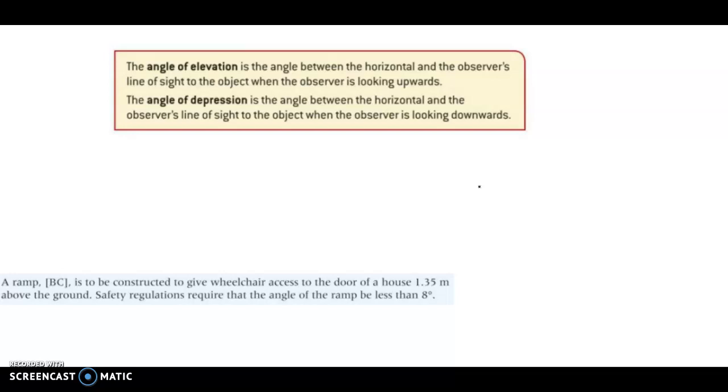So an angle of depression is if you were standing on the side of a cliff looking down into, like, the Grand Canyon. You'd form an angle from the horizontal, like the horizon, when you're looking downward.